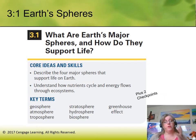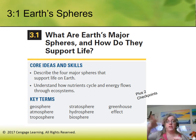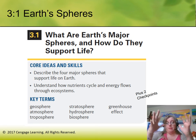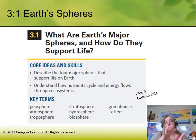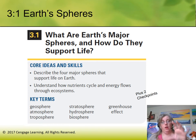Within this chapter, our main ideas cover the earth's spheres. We're going to describe the four major spheres that support life on earth: the geosphere, the atmosphere, the hydrosphere, and the biosphere. Key terms include troposphere — the lowest level of the atmosphere — and stratosphere — the next level up. We'll also discuss the greenhouse effect, which involves the interaction of all four spheres together.